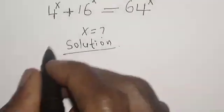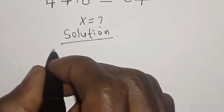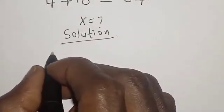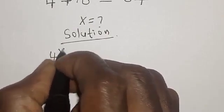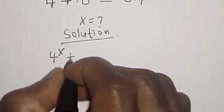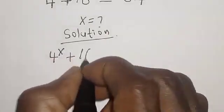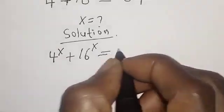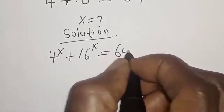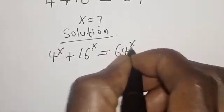Solution. The equation given is 4 raised to power s plus 16 raised to power s is equal to 64 raised to power x.